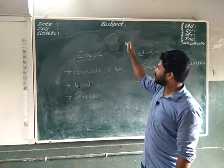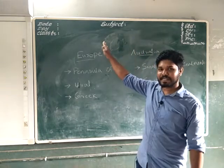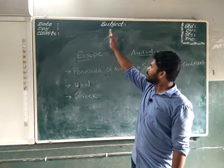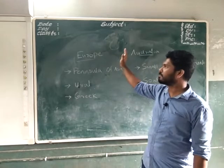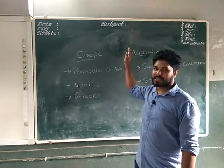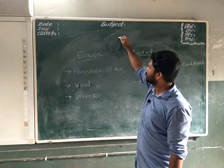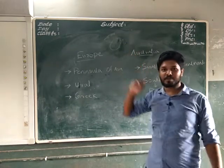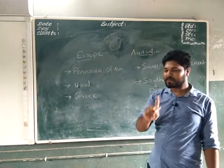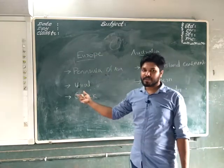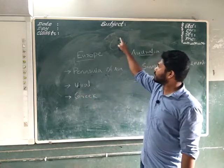Europe is a peninsula of Asia. Asia is situated here, and Europe is on the left side of Asia. The other portions of Europe are completely surrounded by water. In between Asia and Europe there is a mountain range called the Ural Mountains.